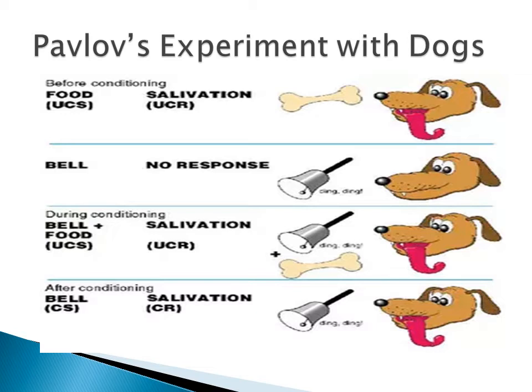To condition the dog, Pavlov rang a bell before providing food to the dog. Each time the food was provided, a bell rang before it. Constant pairing of the bell with the food conditioned the dog, and now the dog began to salivate as soon as the bell rang. Hence, the dog had been conditioned to the sound of the bell.